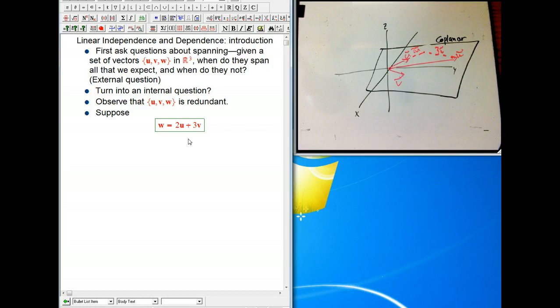So suppose I have this fact, that is one of the vectors is a linear combination of the others. Then, so now suppose I want to make some other vector, let's say x, as a combination of those three. And so that's going to be like maybe c₁ times u plus c₂ times v plus c₃ times w.